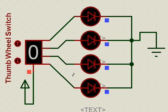That is how the thumb wheel switches can be used. A number of them can also be used for any specific number to be fed to the microcontroller so that it starts working on those kinds of numbers.